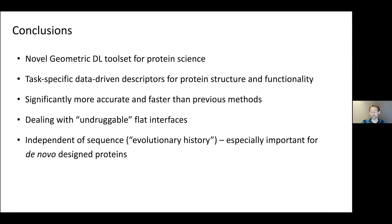In conclusion, geometric deep learning is a novel toolset that can be applied to different problems in protein science. It allows designing task-specific, data-driven descriptors for protein structure and functionality. It is significantly more accurate and faster than previous methods, and it enables development of new therapies dealing with potentially undruggable flat interfaces and protein-protein interactions. Importantly, unlike most methods in this field, it is independent of the sequence or evolutionary history of the protein — especially important for novel designed proteins that have never existed in nature.